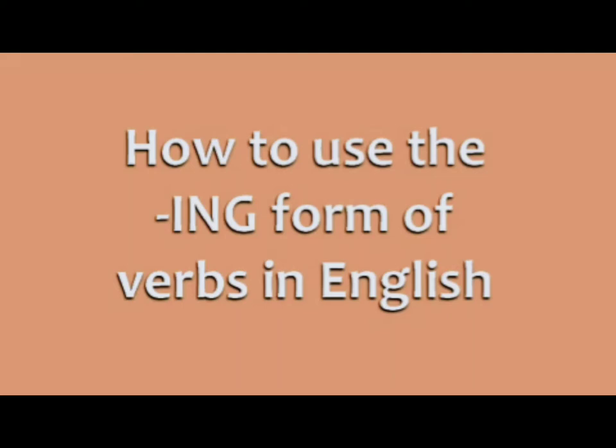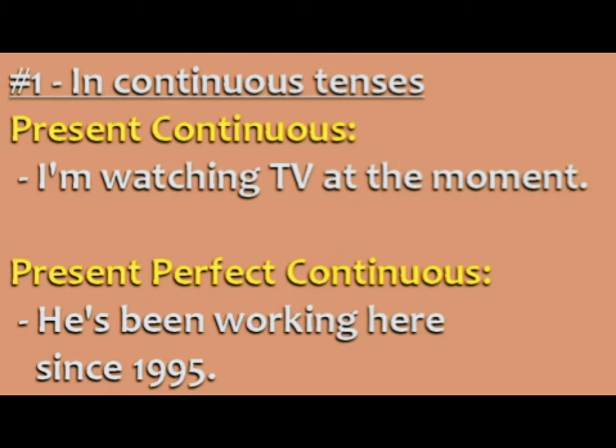How to use the ING form of verbs in English. Number one: use the ING form in continuous tenses when an action is in progress. For example: